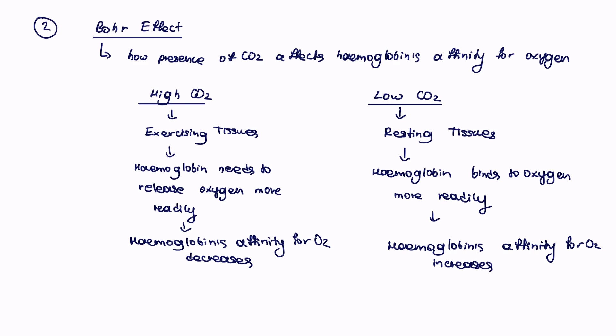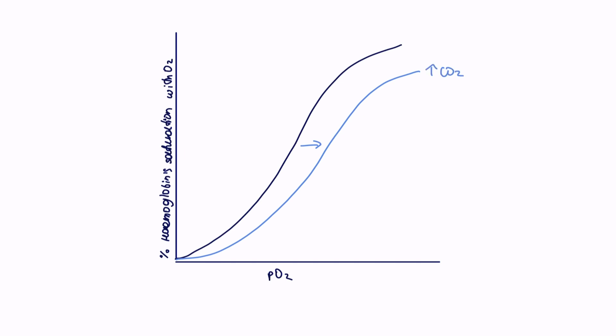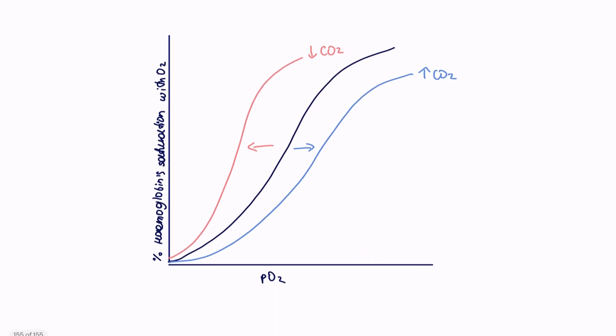Let's represent the Bohr effect on the graph. Draw a graph with the x-axis being partial pressure of oxygen and the y-axis being percentage saturation of hemoglobin with O2. The dark blue curve represents a normal dissociation curve. If it's shifted to the right, this is due to the presence of high CO2 around those tissues. If the curve shifts to the left, it's indicative of lower CO2 concentration around those particular tissues.